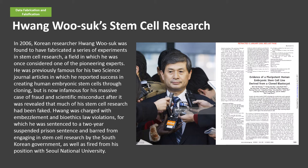In 2006, Korean researcher Hwang Woo-suk was found to have fabricated a series of experiments in stem cell research, a field in which he was once considered one of the pioneering experts. He was previously famous for his two science journal articles in which he reported success in creating human embryonic stem cells through cloning, but is now infamous for his massive case of fraud and scientific misconduct after it was revealed that much of his stem cell research had been faked.